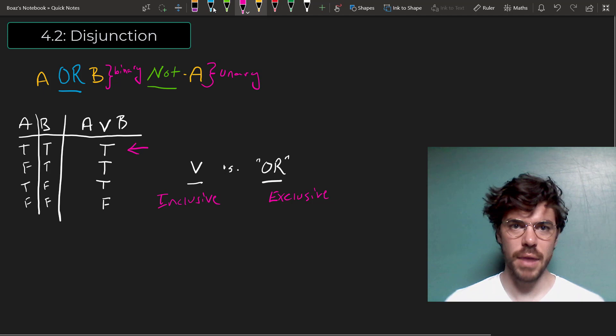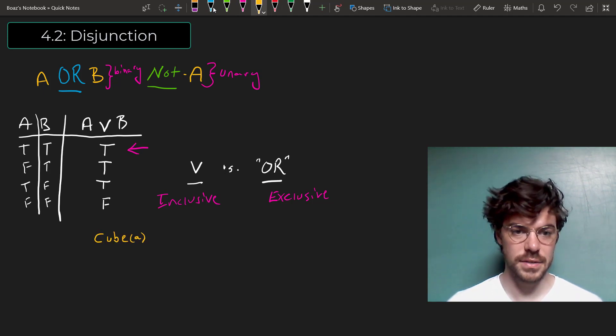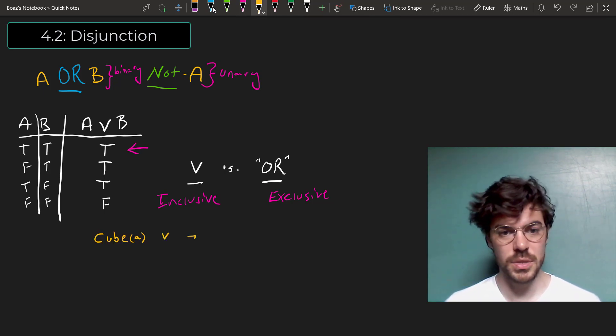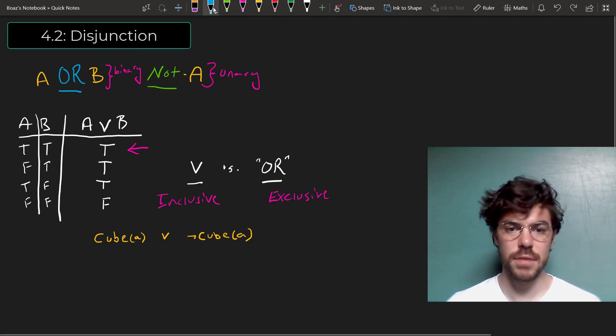So let's look at a few examples before we wrap this up. Consider the following sentence, which uses negation, which we saw in the last video. A is a cube or A isn't a cube. Well, think about the possible combinations here. Suppose that A has to be one of the following.